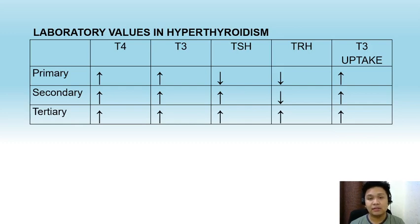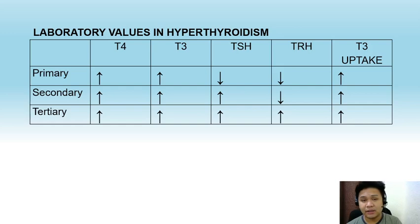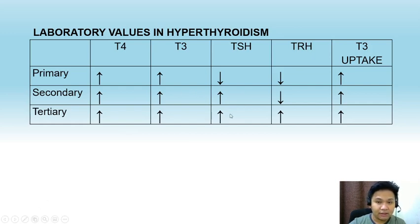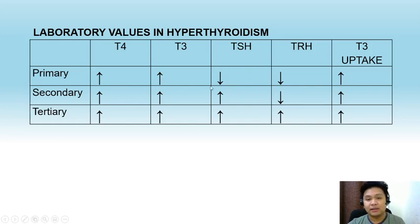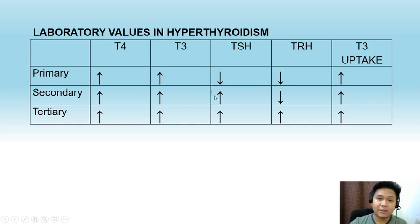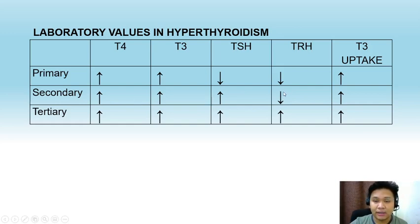The hypothalamus produces high levels of TRH, which stimulates high production of TSH, which then stimulates high production of T3 and T4. To differentiate between these types, we look at the thyroid profile. In primary hyperthyroidism, T4 and T3 are increased, but TSH and TRH are decreased due to negative feedback. In secondary hyperthyroidism, TSH is increased, thus T3 and T4 are increased; TRH is decreased since the hypothalamus responds normally to elevated T4 and T3 via negative feedback.